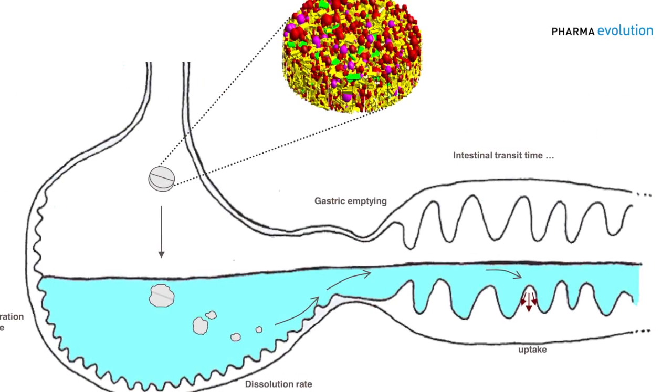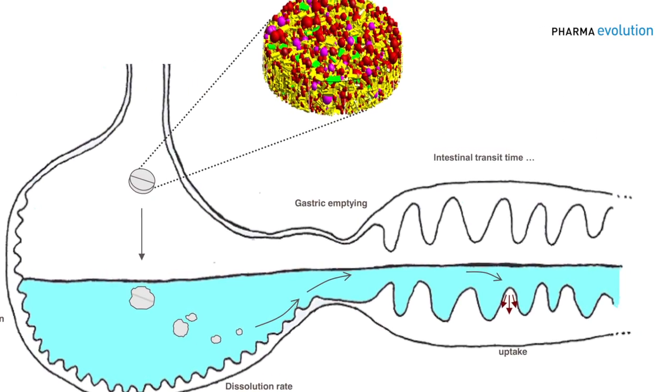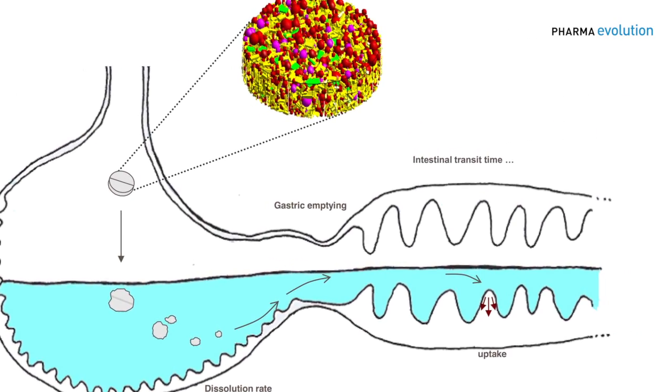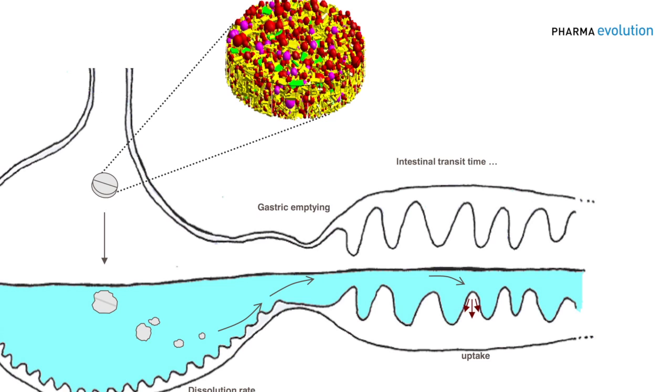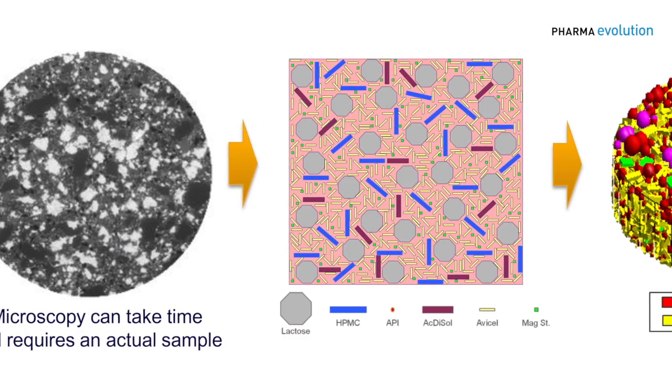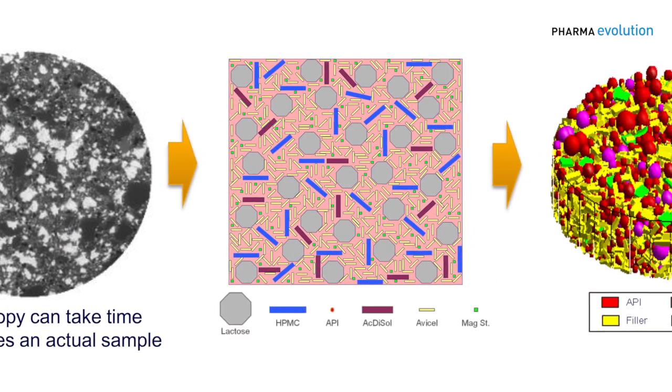How do we ensure that when they do perform their function, we get drug coming out of our dosage form and it goes to the right places? It's all about our ability to get a dosage form that is going to consistently perform in the right way, and the only way we can really do that is to go down to the particulate level and see how those particles are going to interact.